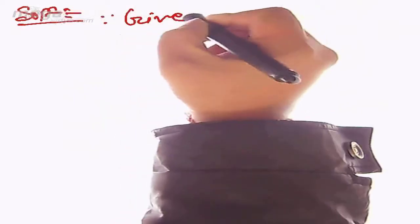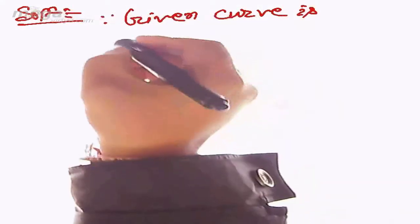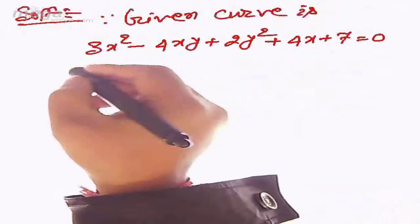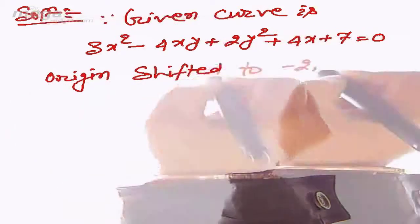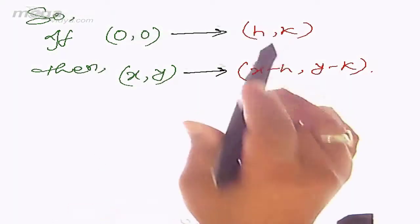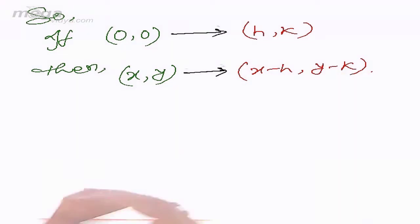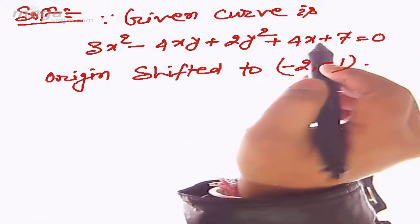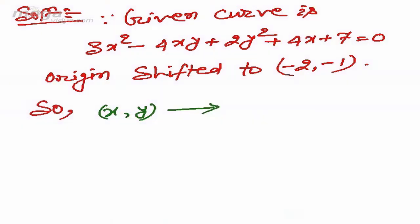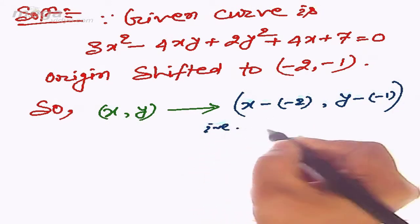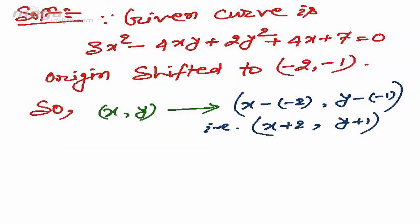The given curve is 3x² - 4xy + 2y² + 4x + 7 = 0. This is the original curve. The new origin is (-2, -1). In this situation, if (0,0) is shifted to (h, k), then (x, y) shifts to (x-h, y-k). So to get the equation of the same curve in the new position, we will shift x and y to (x+2) and (y+1).